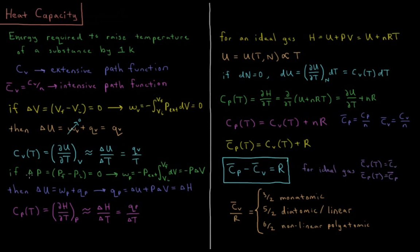If the change in pressure during a process is zero — so P-final minus P-initial equals zero — then for constant pressure work, the external pressure is independent of volume, so we can bring it outside the integral. The work then becomes negative P-external times the integral of dV from V-initial to V-final, which simplifies to negative P times delta V.